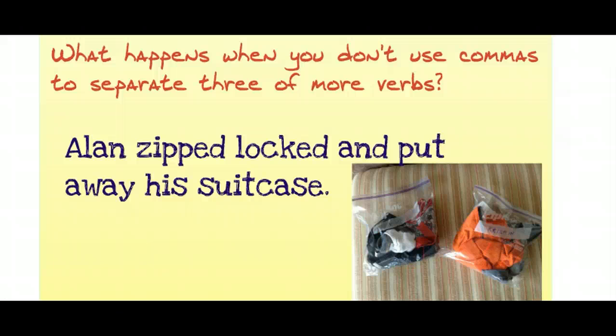We use commas to join verbs into one sentence in order to make our writing more concise. It's much easier to say 'Alan zipped, locked, and put away his suitcase' instead of three separate sentences: 'Alan zipped his suitcase. Alan locked his suitcase. Alan put away his suitcase.' But in order to combine three ideas into one sentence, we have to use commas to separate those ideas.